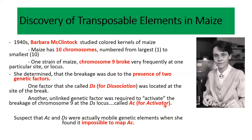She was unable to map the position of the activator element — she could not determine whether the Ac element was present on chromosome 1, 2, or some other chromosome. Because whenever she tried to locate it, the element was present on a different chromosome in different plants. So it was impossible to map this element.